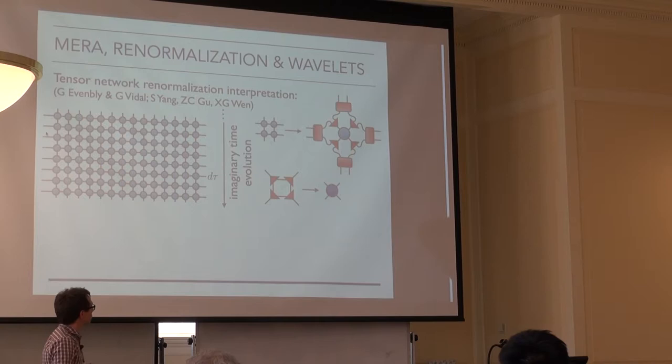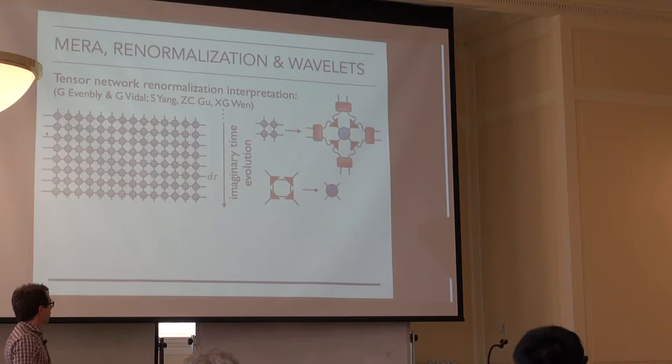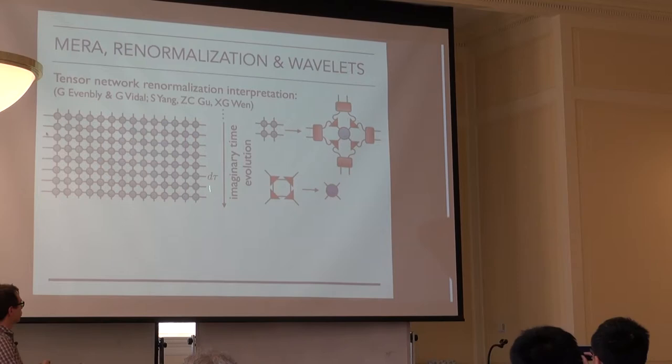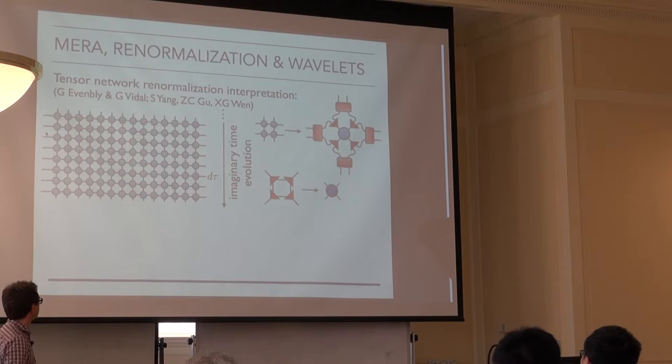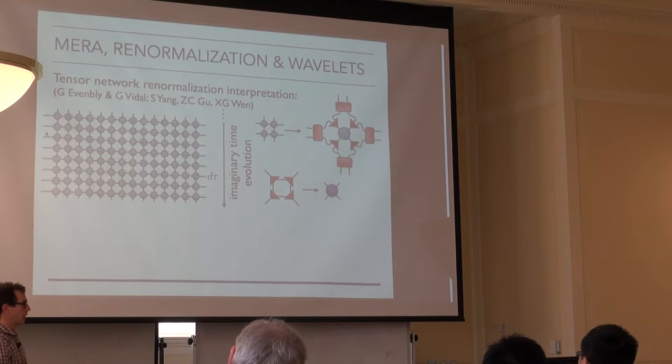Another side note: I presented this as a renormalization group transformation of quantum states. You can also start from a path integral or imaginary time evolution that would prepare your state from any given initial state, and perform a renormalization procedure known as tensor network renormalization at the level of the partition function. This is a tensor network representation of partition functions, obtained by doing imaginary time evolution in a Hamiltonian framework and using tensor decompositions and recombining them.